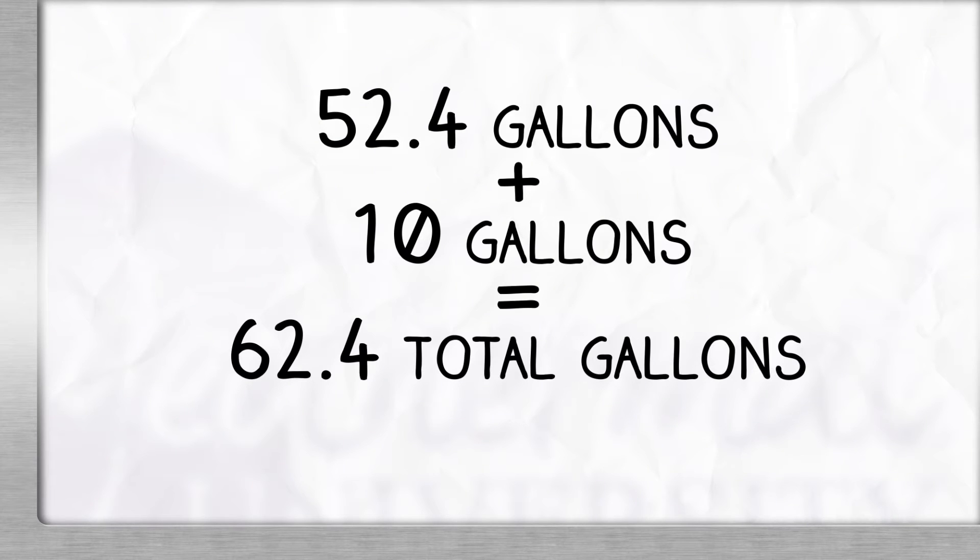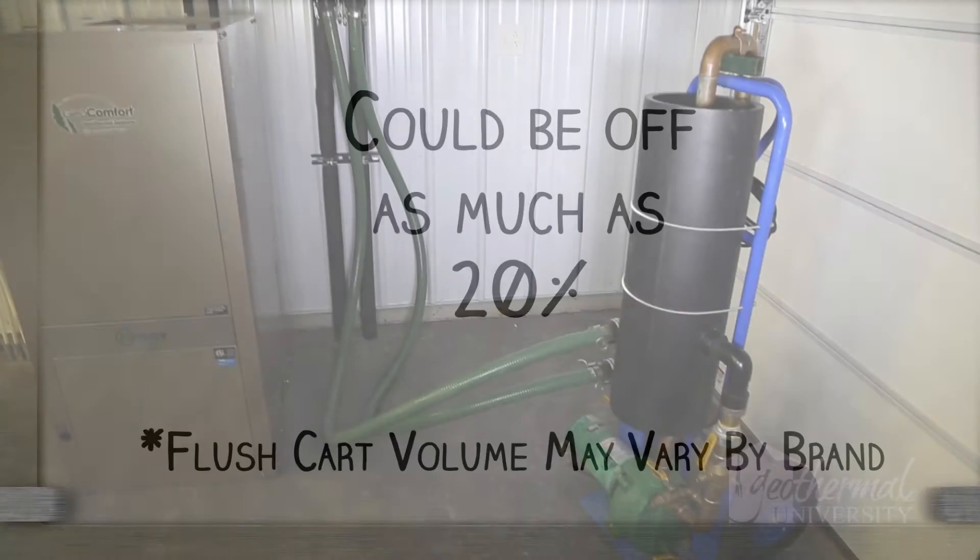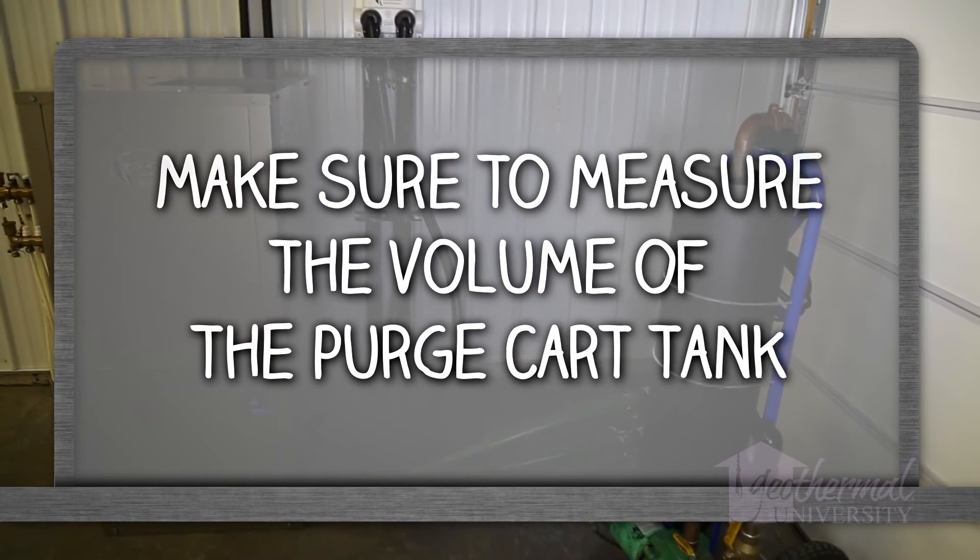So, our calculated number of gallons for purging of 52.4 gallons for the loop and system plus our tank on the flush cart. Otherwise, the protection level could be off by as much as 20%. To be precise, we recommend measuring the volume of the tank on your purge cart.